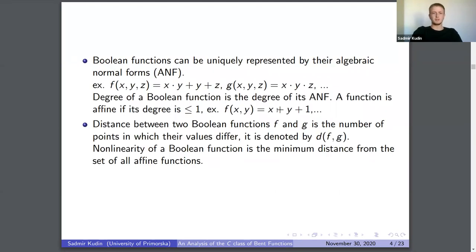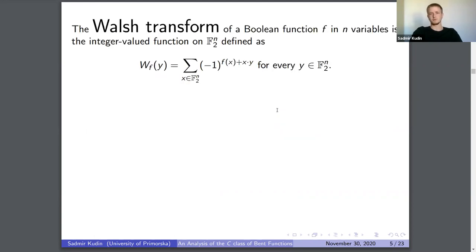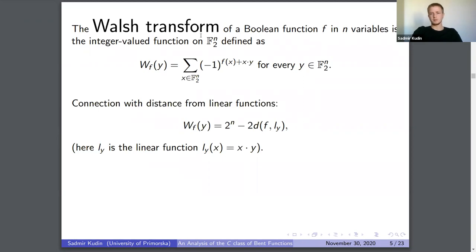A very useful tool for studying nonlinearity is the Walsh transform. It is defined as a sum over the whole space F2^n — the Walsh transform of your function at point y is this specific sum. You can think of it as a kind of Fourier transform, but now the group is F2^n rather than the reals. It is useful because the Walsh coefficient at point y equals 2^n minus two times the distance between your function and a linear function determined by the dot product x·y.